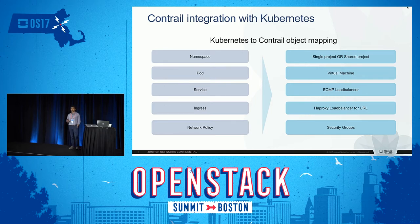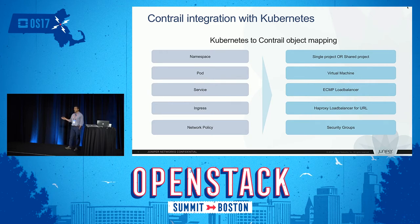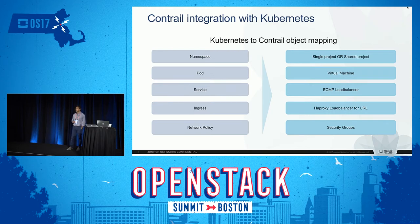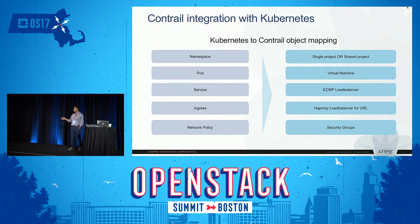Ingress is when you're entering your Kubernetes cluster from outside to inside — for example, URL A goes to service 1 and URL B goes to service 2. We instantiate our HAProxy-based load balancer for this. Network policy is currently in beta and will become GA in Kubernetes 1.7. We have implemented it using security groups to control isolation within a namespace — controlling which groups of pods can talk to each other, and what ports are allowed.